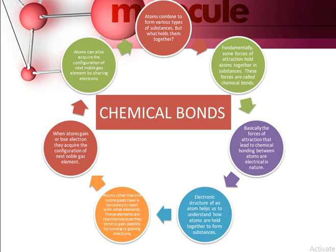Atoms other than noble gases have a tendency to react with other elements. These elements are very reactive because they tend to gain stability by losing or gaining electrons. When atoms gain or lose electrons, they acquire the electronic configuration of the next noble gas element. Atoms can also acquire the configuration of the next noble gas element by sharing electrons.